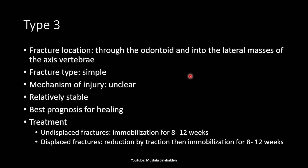Type 3 fracture location goes through the odontoid and into the lateral masses of the axis vertebrae. It is a simple fracture. The mechanism of injury is unclear but involves axial loading and applied forces. It is a relatively stable fracture and has the best prognosis for healing because of the larger bone surface areas compared to Type 1 and Type 2 fractures. If undisplaced, treatment is immobilization for 8 to 12 weeks.